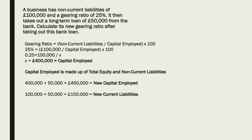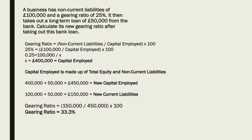We simply slot those numbers back into the gearing ratio formula to calculate the new gearing ratio. That will be £150,000 divided by £450,000, expressed as a percentage. The answer is 33.3%. See you in the next session.